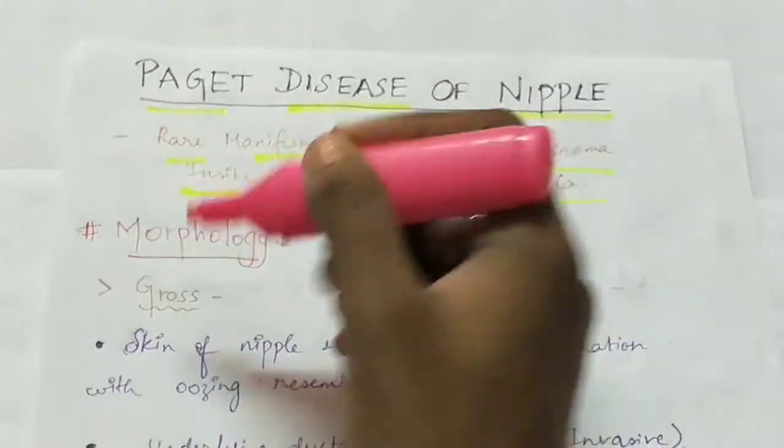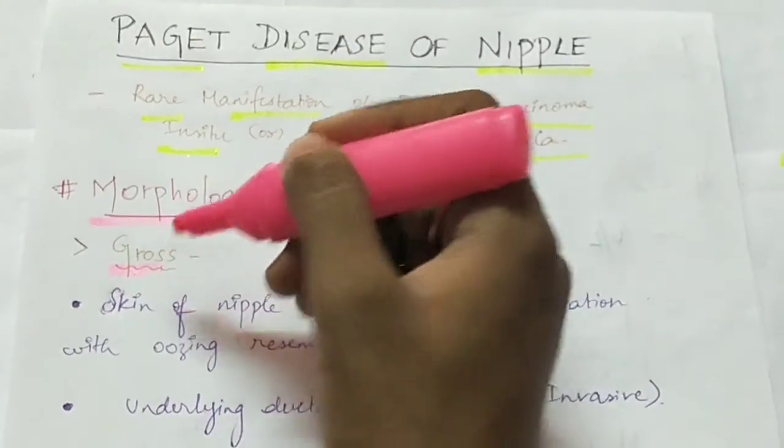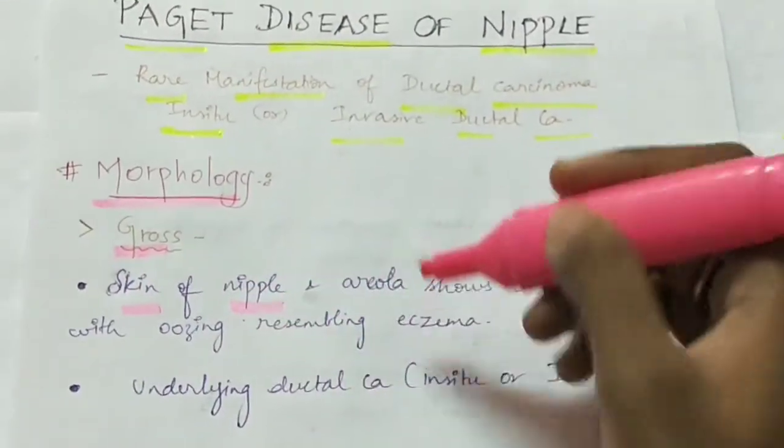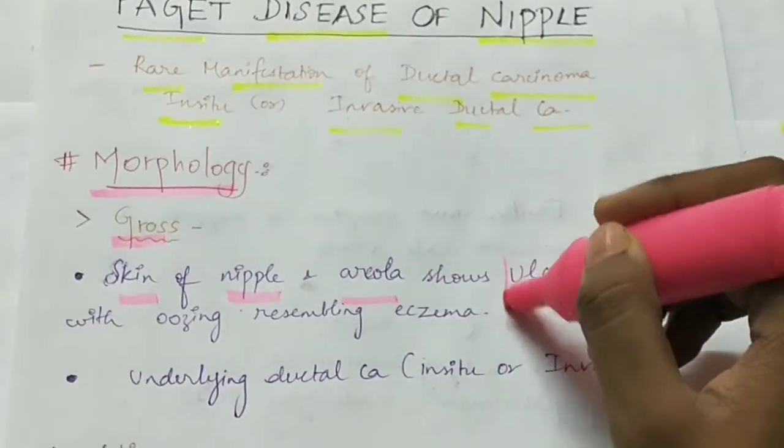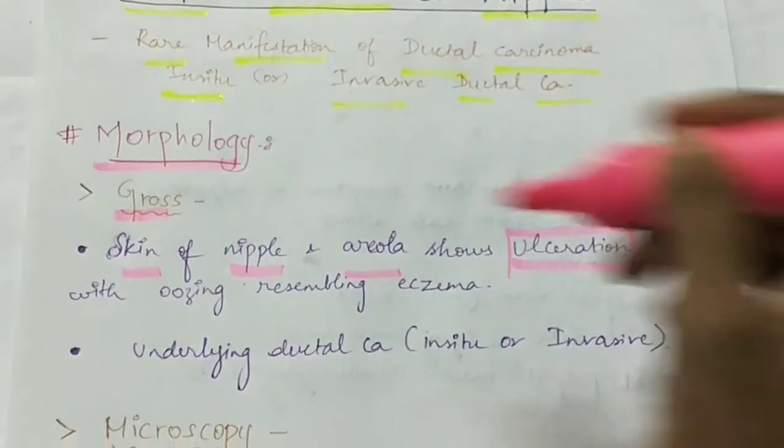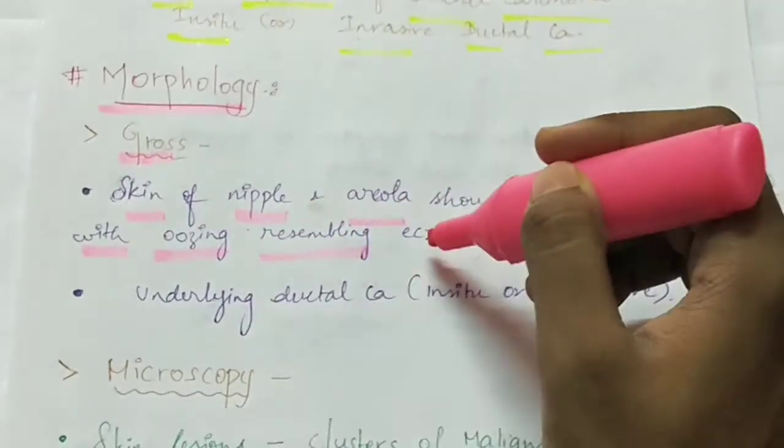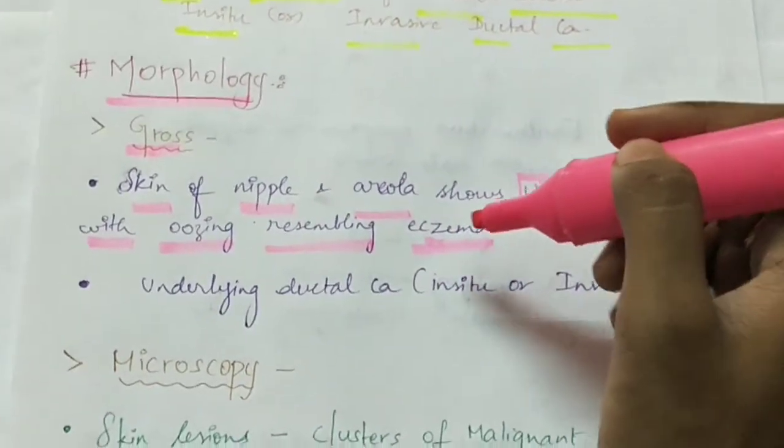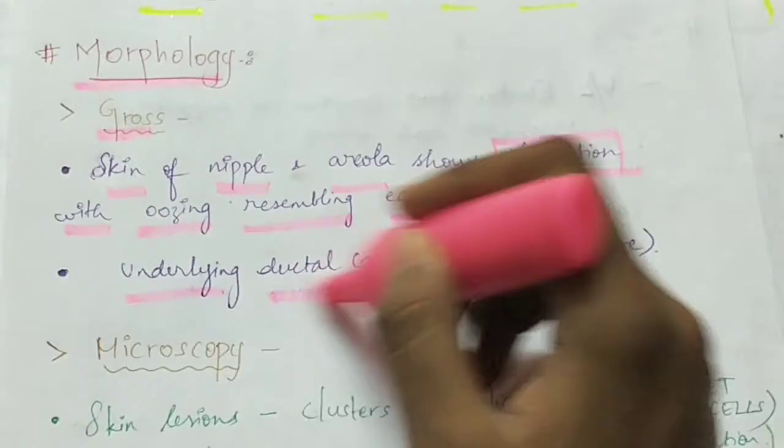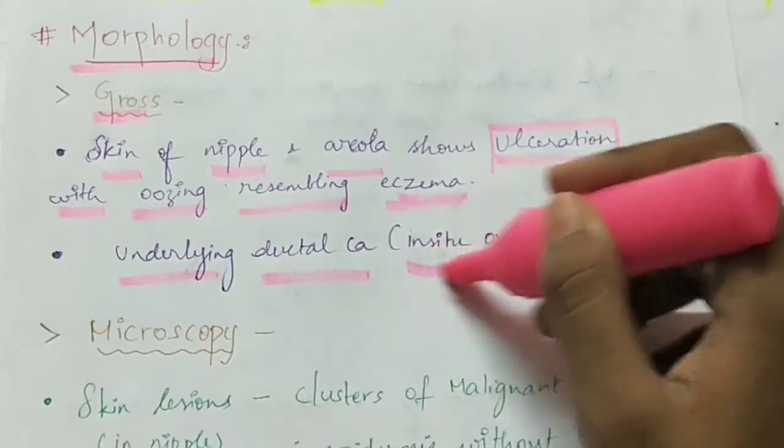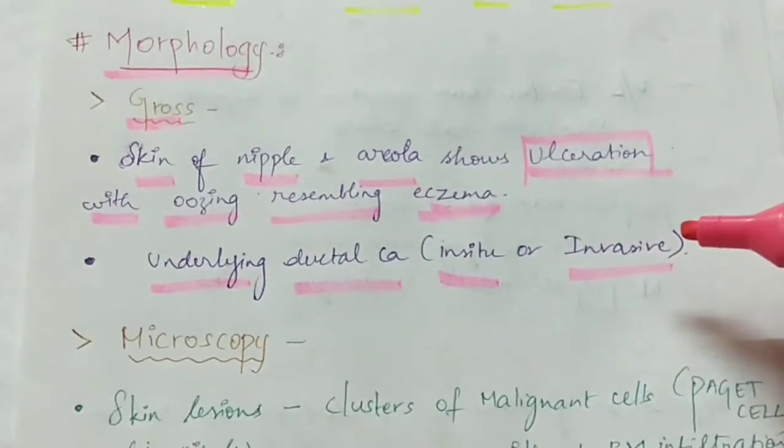Coming to its morphology, grossly the skin of the nipple and the areola shows ulceration with oozing which resembles eczema. And there will be an underlying ductal carcinoma either in situ or invasive ductal carcinoma.